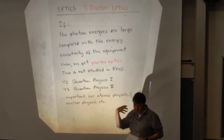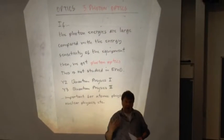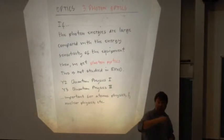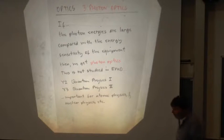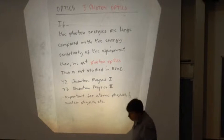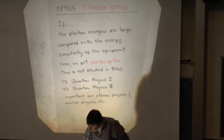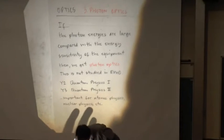We're going to have a specific lumpiness to the radiation that we get from atomic and nuclear systems, and this is not studied in EMO. Remember, this is a classical wave theory — we've got continuously varying electric and magnetic fields.